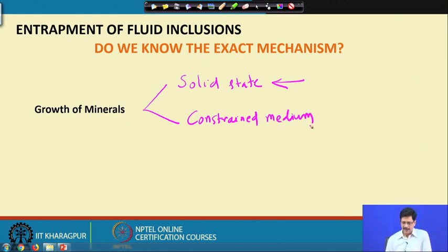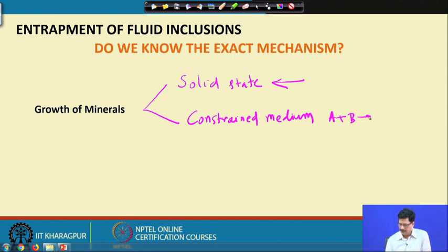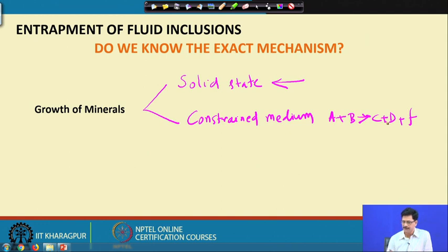In a polycrystalline aggregate, one mineral assemblage can give rise to another. If any of the reacting mineral phases happens to be a hydrous phase — for example, A + B giving rise to C + D plus a fluid phase — then this fluid phase is actually evolving during this reaction as minerals C and D are forming. There is every possibility that during this process of growth, these minerals will encapsulate the fluid that was present.